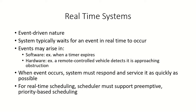In this video we will look at what are real-time systems and what are real-time processes and how they are scheduled. Real-time systems are event-driven in nature — these systems are waiting for an event in real time to occur. This event may be a software event like when a timer expires, or it may be a hardware event like a remote-controlled vehicle which detects an approaching obstruction. Whenever an event occurs, the system is supposed to respond and service it as quickly as possible.